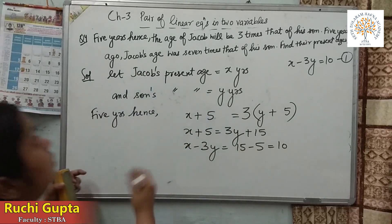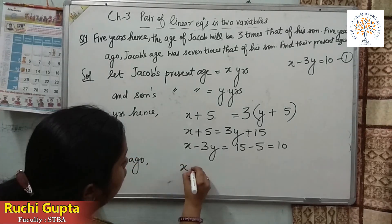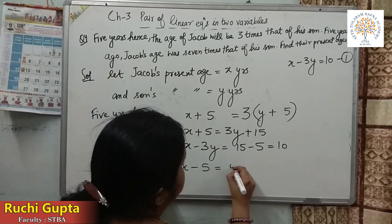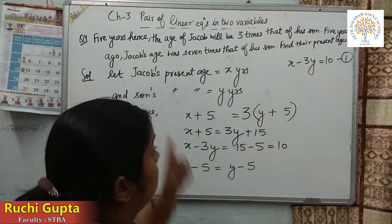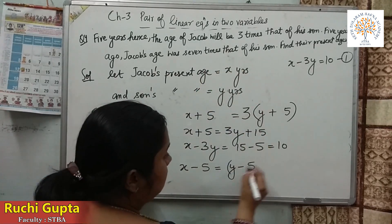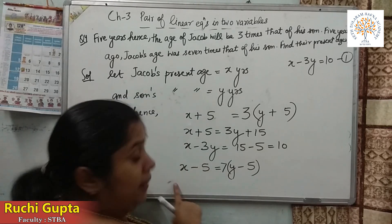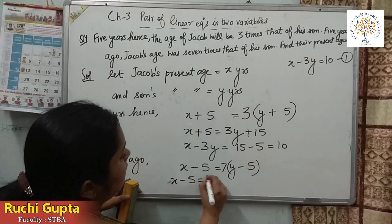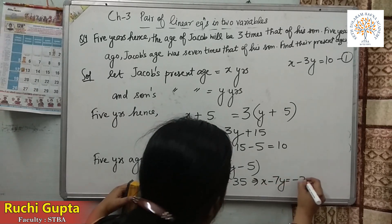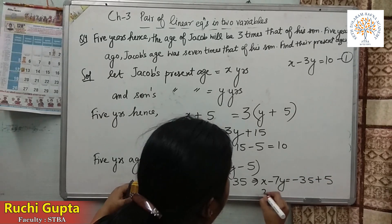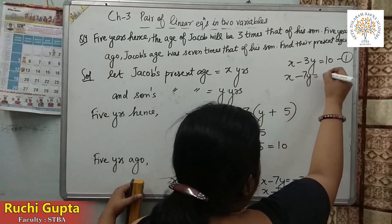The second condition is: 5 years ago, Jacob's age was 7 times the age of his son. So Jacob's age was X minus 5 and son's age was Y minus 5. We multiply the son's age by 7 to make them equal: X minus 5 equals 7(Y minus 5), giving X minus 5 equals 7Y minus 35. Rearranging: X minus 7Y equals minus 30. This is our second equation.